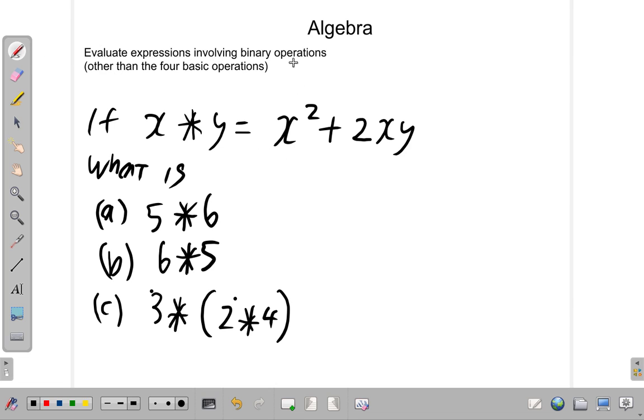We're going to evaluate expressions involving binary operations other than the four basic operations. Now, what does that mean? Binary operation, binary means between two, between two variables or symbols. The four basic operations are addition, subtraction, multiplication, and division.